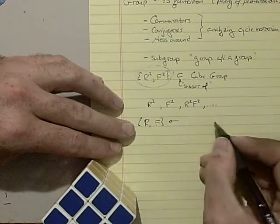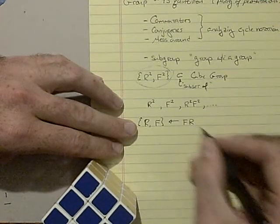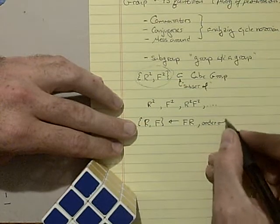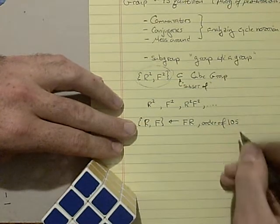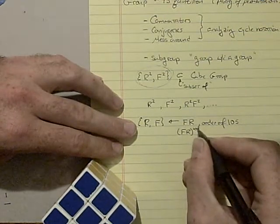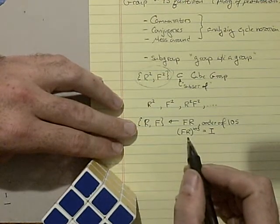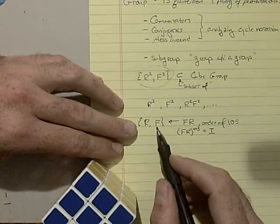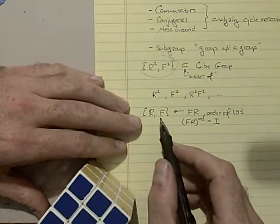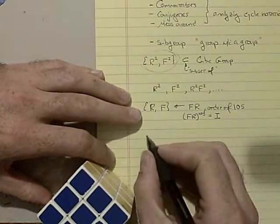In fact, we've already seen one element of this group. We looked at the move FR in an earlier video, and we found out that it has an order of 105, meaning that on the classic Rubik's cube, if you do this move 105 times you get back to the identity. That's a pretty complicated move that's in this particular group, so this is a fairly important subgroup. There's some useful moves in there.